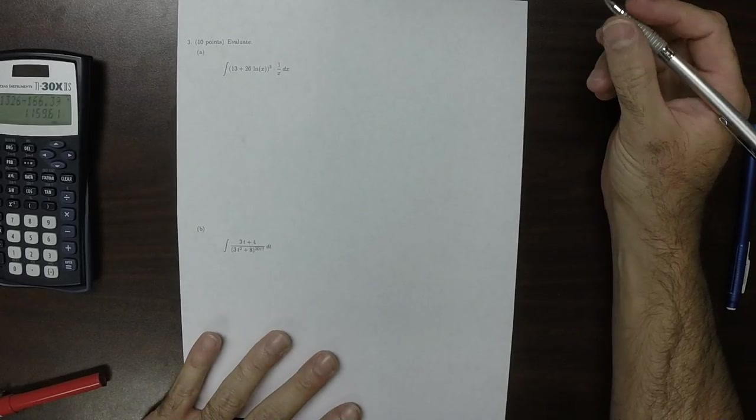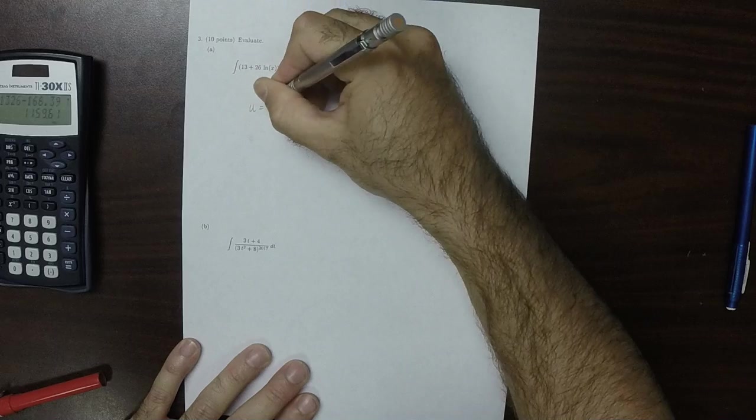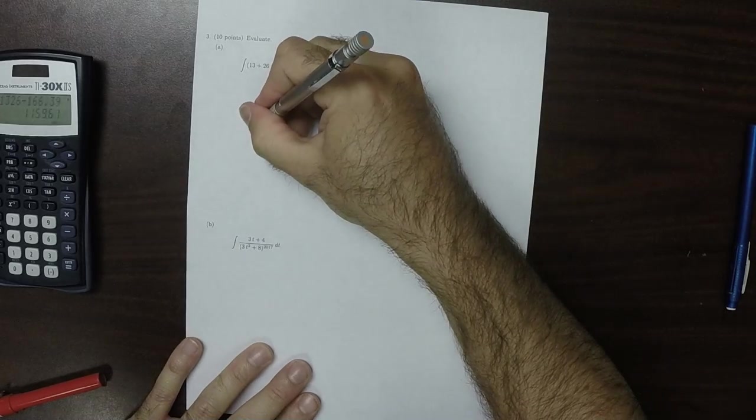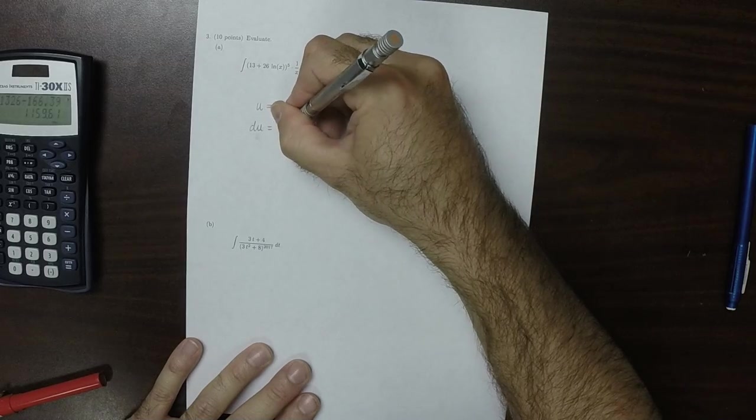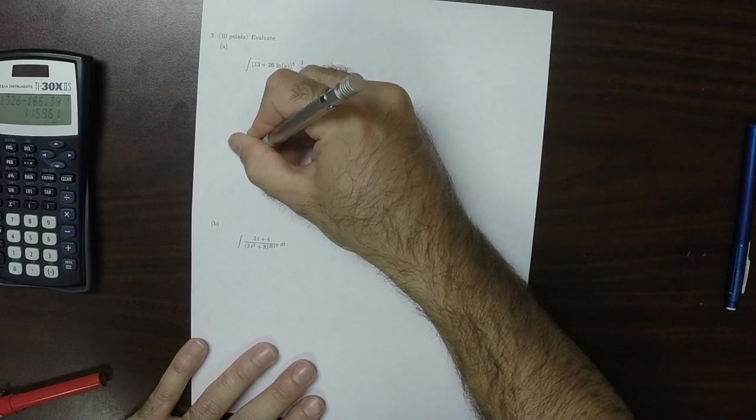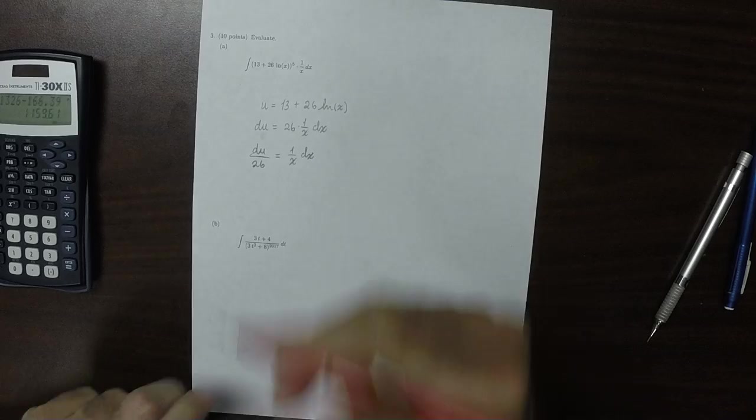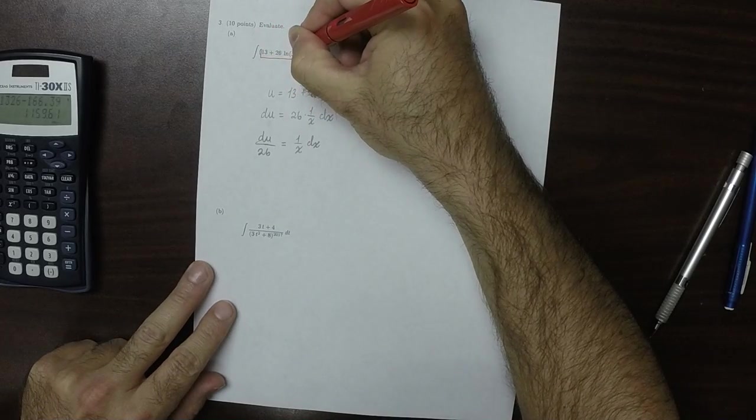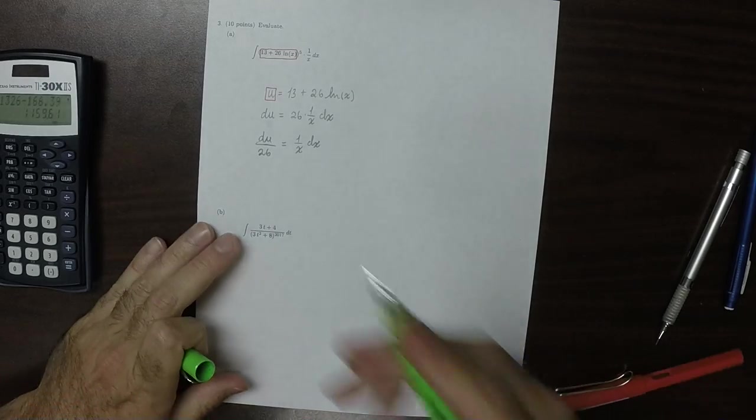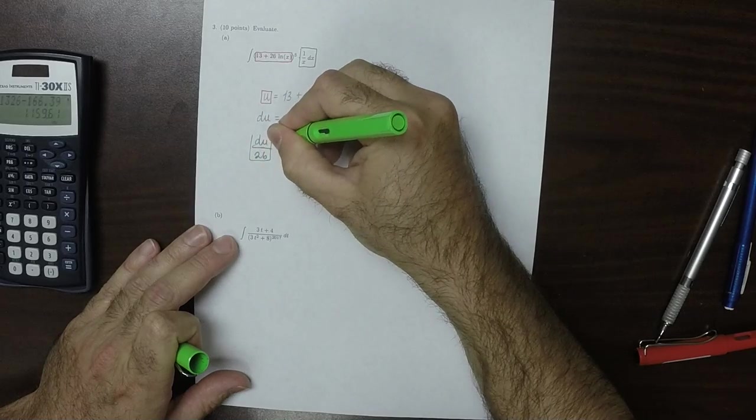For question 3, these are antiderivatives, relatively straightforward substitution. So I'll do the substitution u is 13 plus 26 log x. Then du is 26 times 1 over x dx, but I don't need that 26 on the right side. So I'll move it over to the left-hand side. And the correspondence is that all of this stuff inside of here is being covered by this variable.